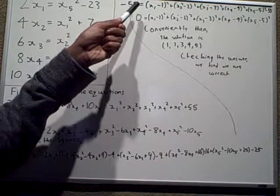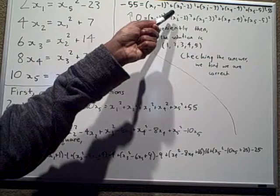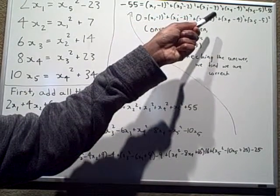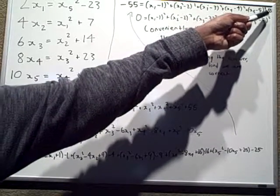So then you turn them into squares. Negative 55 equals x1 minus 1 squared plus x2 minus 2 squared plus x3 minus 3 squared plus x4 minus 4 squared plus x5 minus 5 squared minus 55.